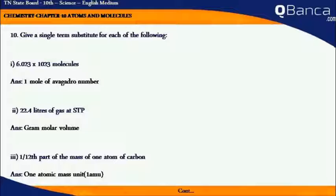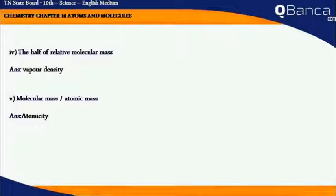22.5 liter of gas at STP is the molar volume. 1 by 12th part of mass of 1 atom of carbon is the 1 atomic mass unit. The half of the relative molecular mass is the vapor density. Molecular mass by atomic mass is the atomicity.